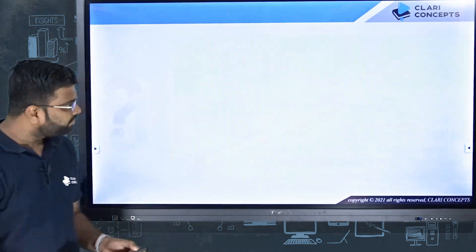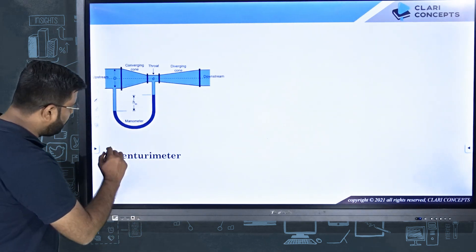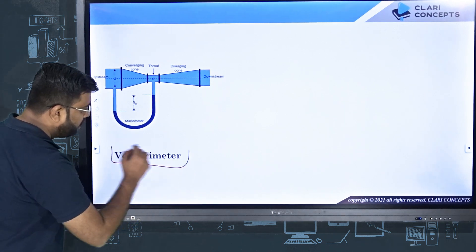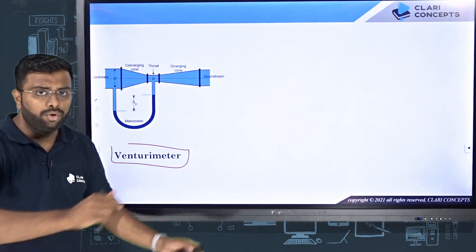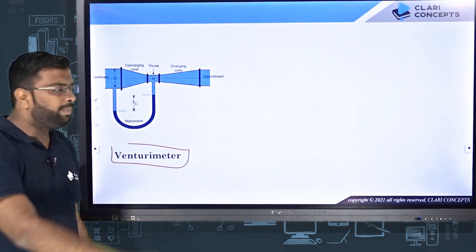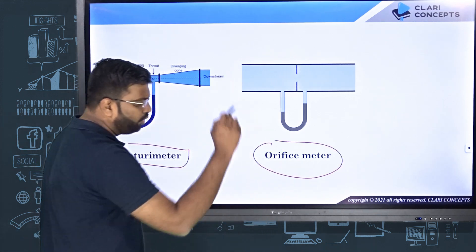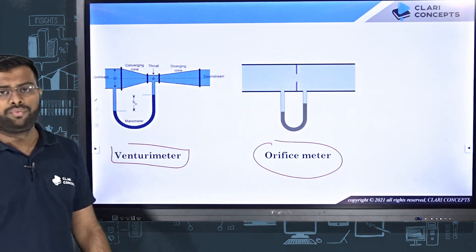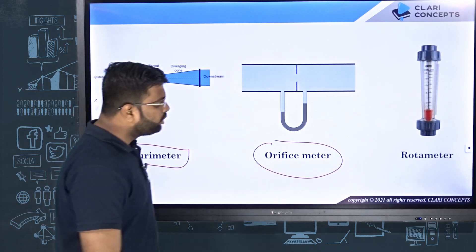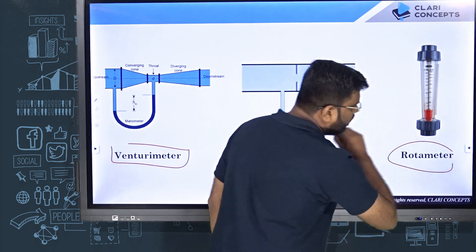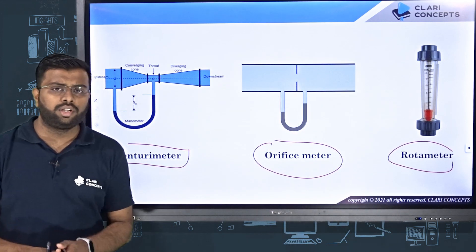For closed pipes, we have devices available: the venturimeter, which measures flow rate of fluid flowing through a closed pipe; the orifice meter; and the rotometer. These are the devices used to measure flow rate of fluid flowing through closed pipes.